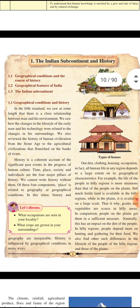History is a coherent account of the significant past events in the progress of human culture. Coherent means ideas that are clear and easy to understand. Time, place, society, and individuals are the four major pillars of history. We cannot write history without them, because history occurs at a place and time, and we should know in which society and to whom it belongs.